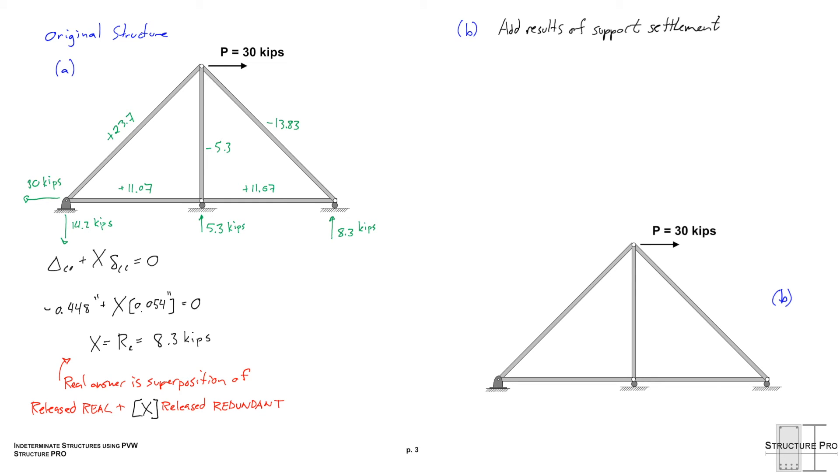Part B. What if we are adding the results of support settlement? So if we recall back to the original we know that it was asking for a settlement of 1 inch at support B which is the middle support and a half inch at support C which is our far right support. So the first thing we do we have to make a new compatibility equation because the settlement at C is no longer zero. So let's call it delta C and that's going to be 0.5 inches.